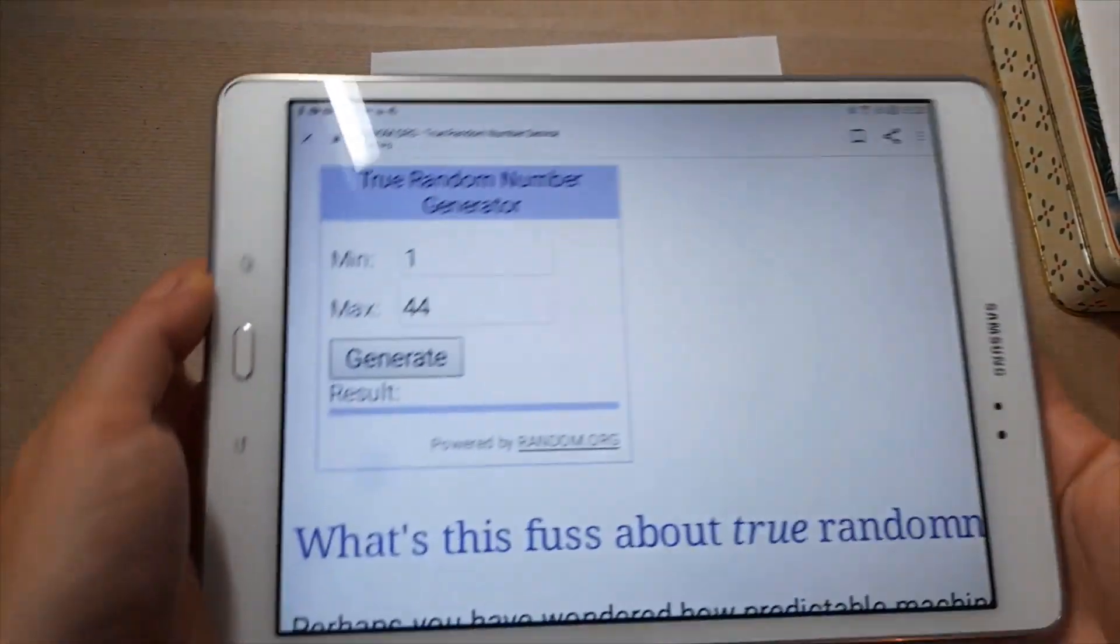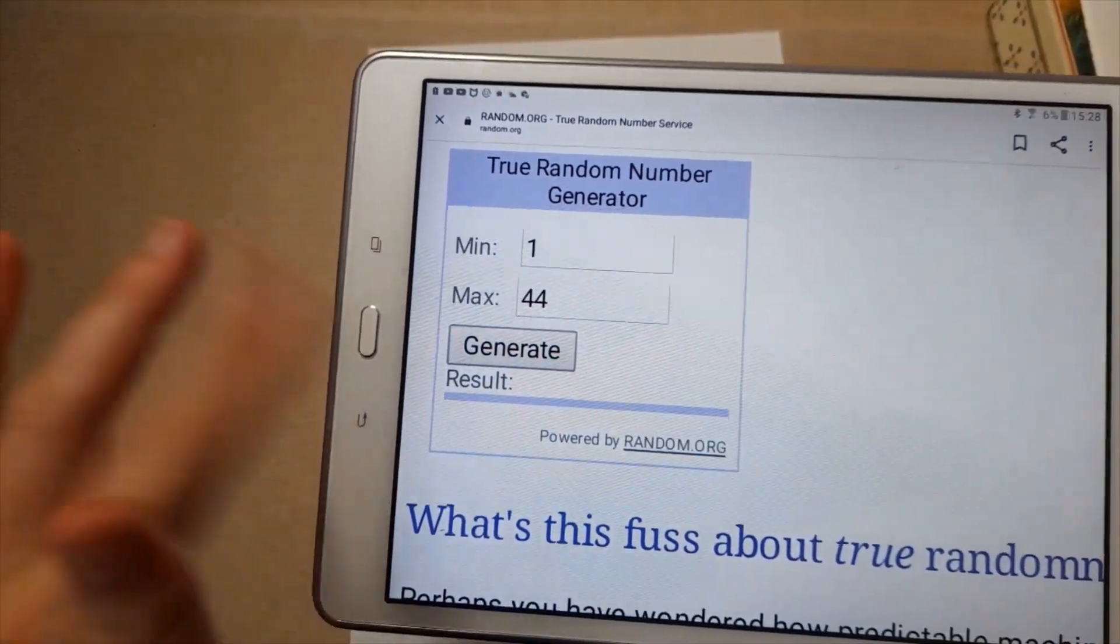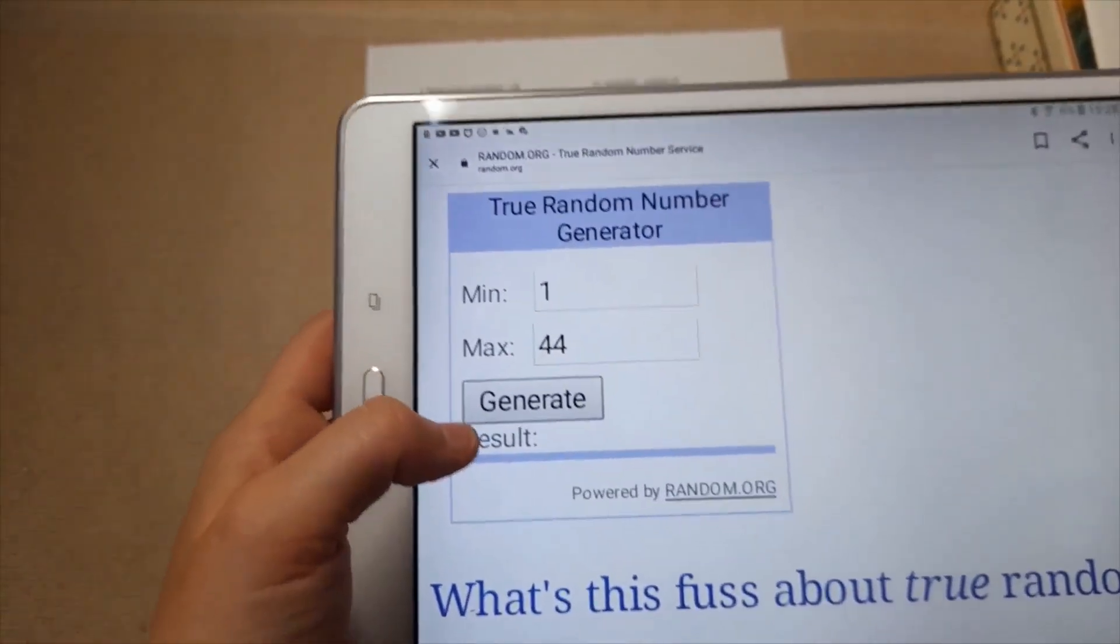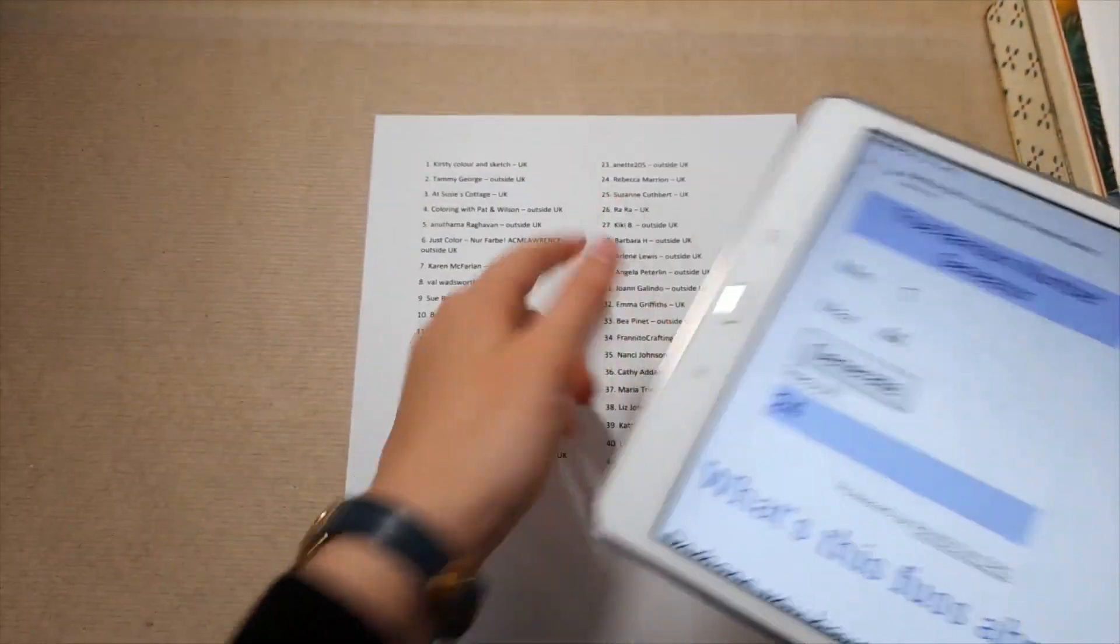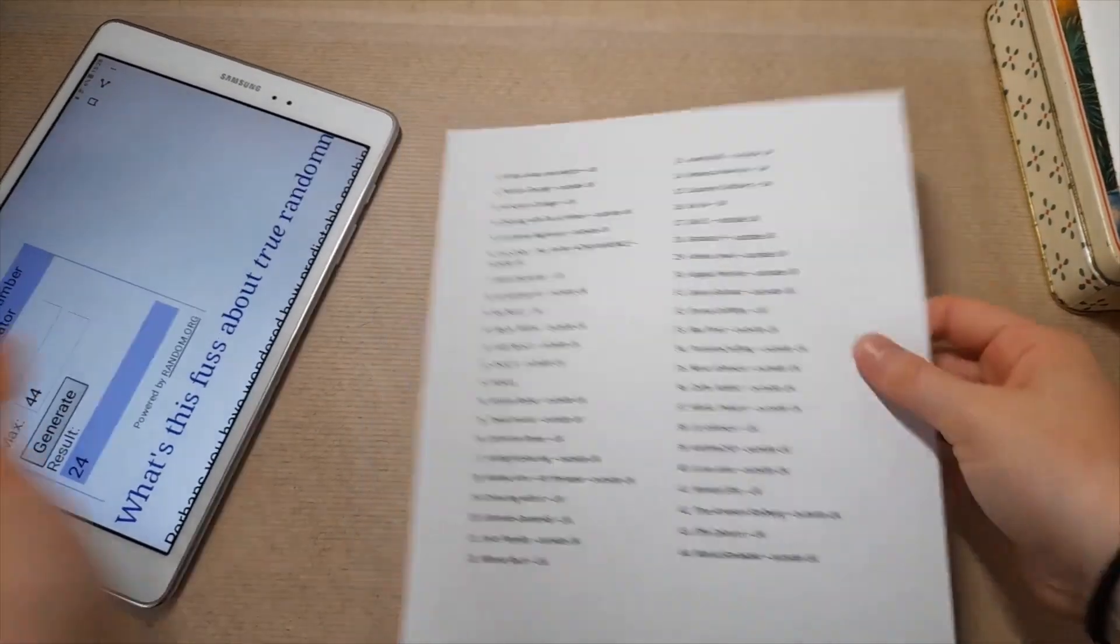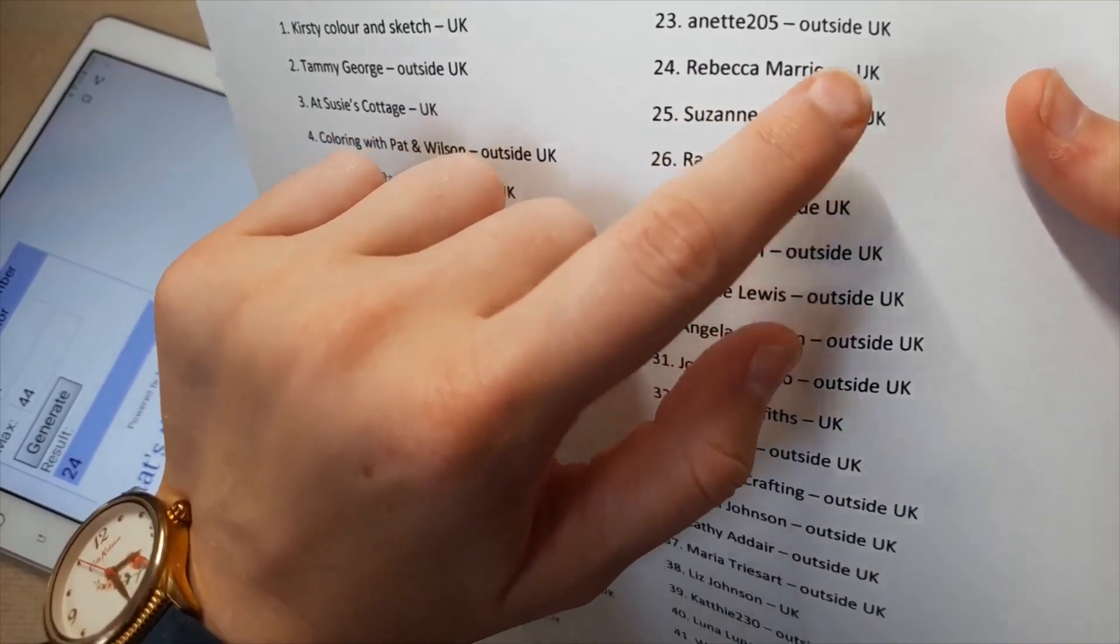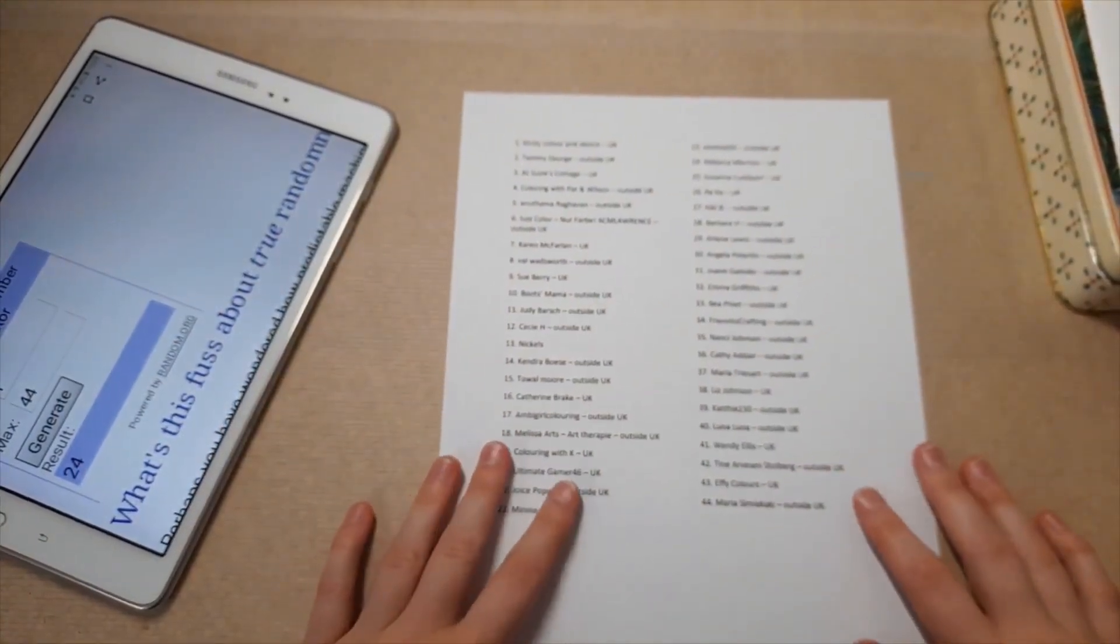Okay, so now I'm going to be seeing who has won the giveaway. So in random.org I've put a minimum of one and a maximum of 44 because that's how many of you there are. And yeah, we're just going to see who's won the giveaway, so best of luck to everybody. Okay, number 24, so that is, if you can see there, number 24 Rebecca Marion, who is in the UK. So congratulations Rebecca, I'm so happy for you.